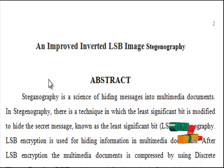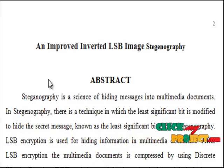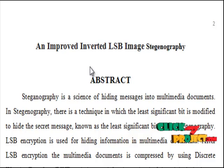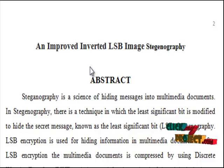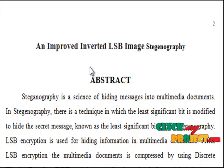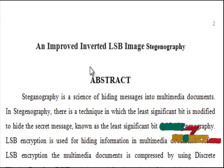LSB encryption is used for hiding information in multimedia documents. After the LSB encryption, the multimedia document is compressed using the Discrete Wavelet Transform (DWT) technique. For retrieval, the original image is decompressed by Inverse Discrete Wavelet Transform using LSB decryption.